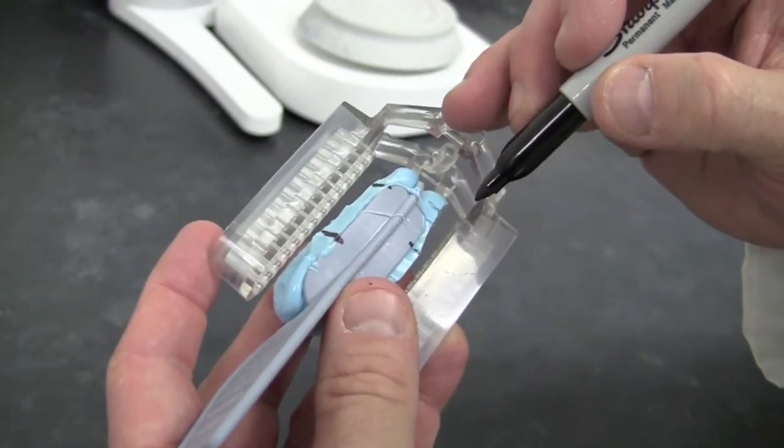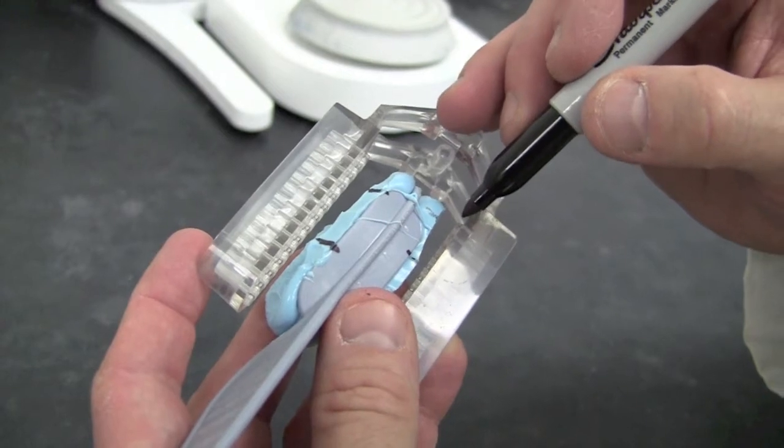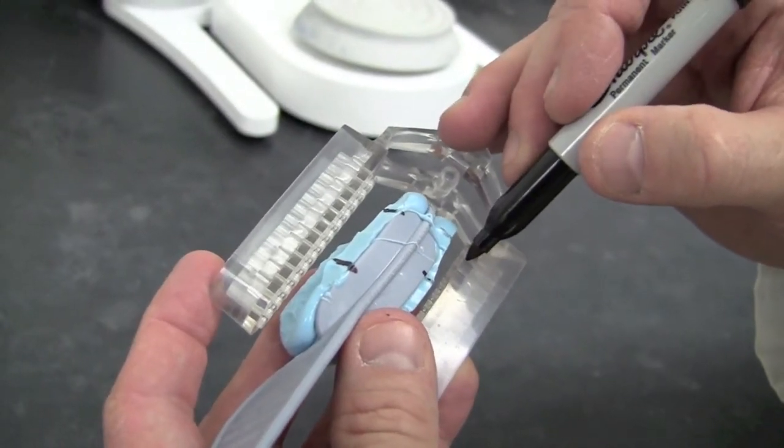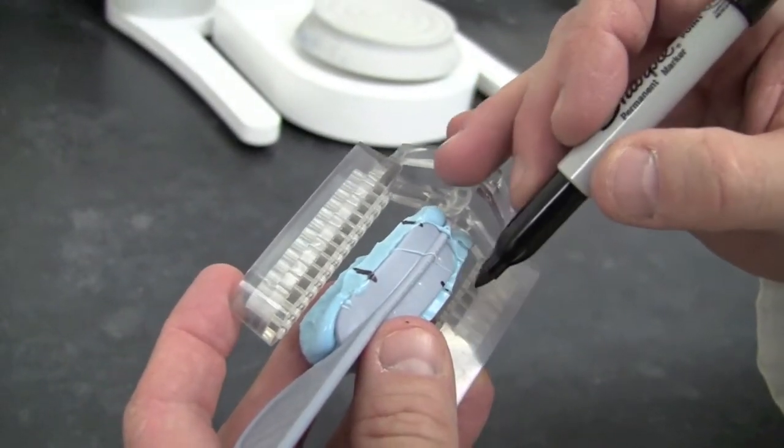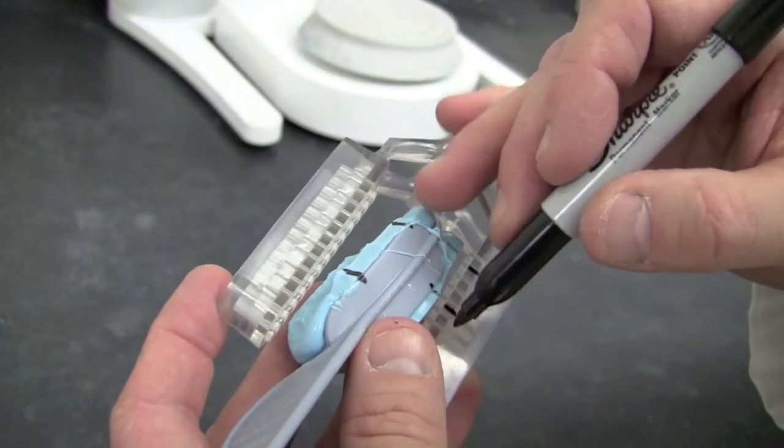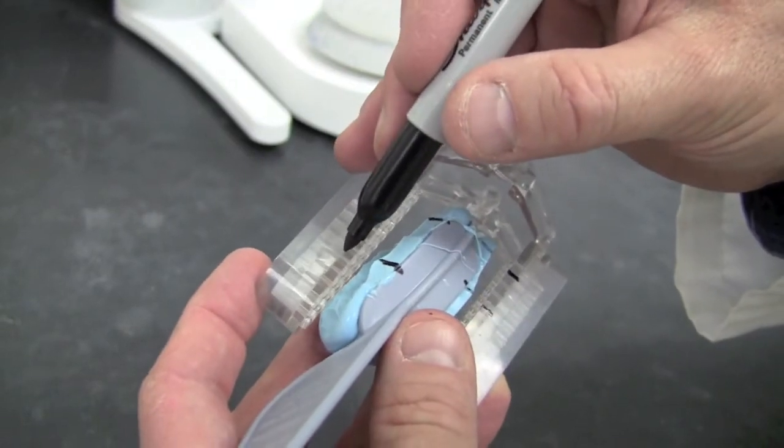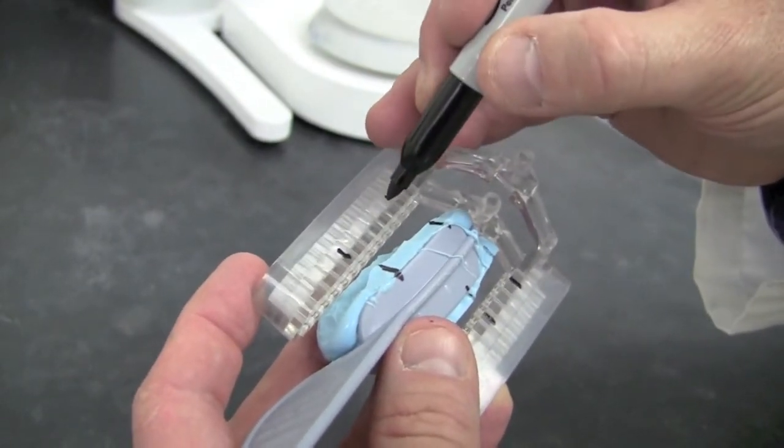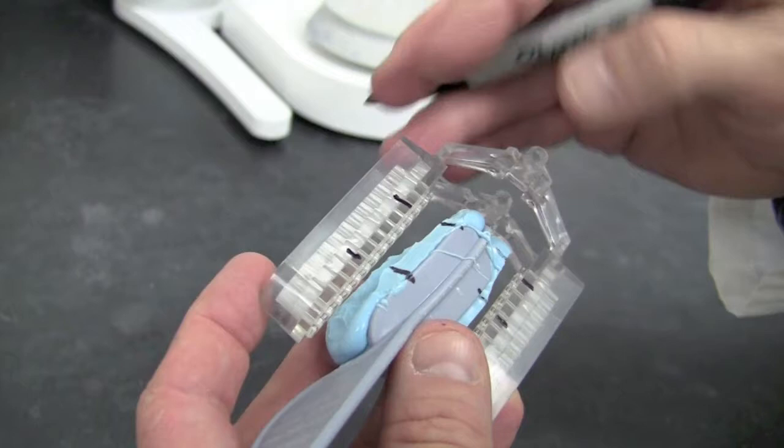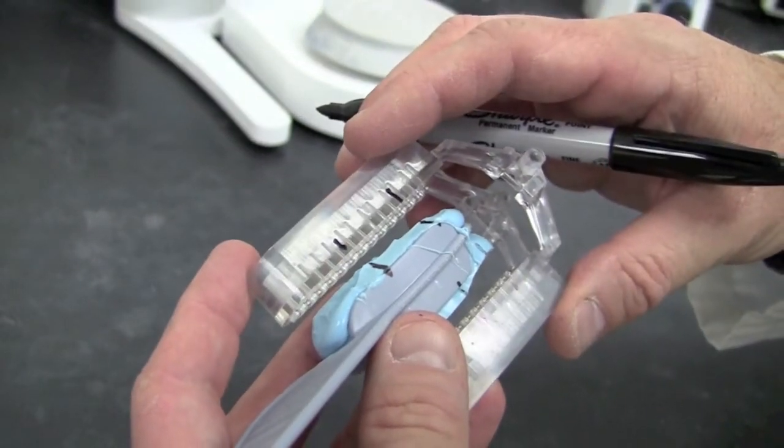The next step is to mark our articulator where we want the pins to rest in our impression. And remember, we're wanting to get it roughly in the same position. It's not going to be exact every time, but that gives us an idea of where the pins should fall from the articulator translated to the impression.